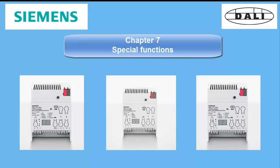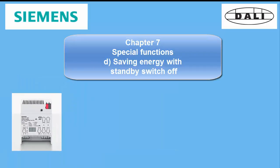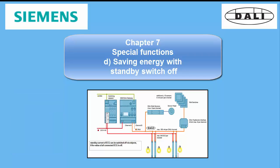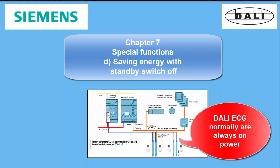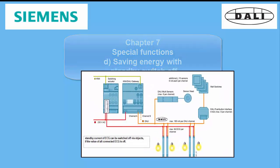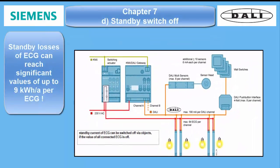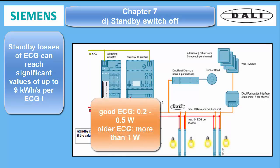Chapter 7 Special Functions: The Standby Switch-Off Function. The standby switch-off function is a standby energy saving option. As ECGs are permanently powered on DALI, they will also use energy when the lamps are off. This varies between brands and ECG design and can reach quite significant values. Good ECGs have between 0.2 to 0.5 Watt power dissipation, while older ones can exceed 1 Watt.